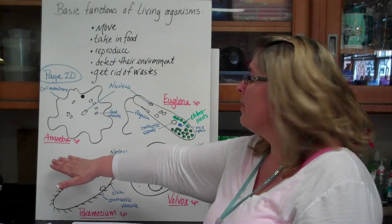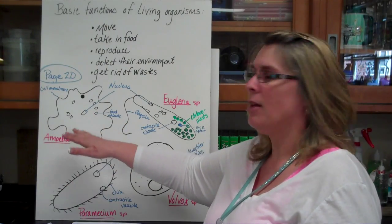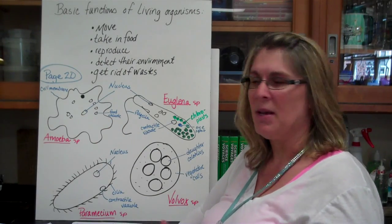The first example that we need to look at is amoeba. Amoeba is a single celled organism that has an irregular shape. I've labeled the nucleus, the food vacuole and the cell membrane. Very basic things.